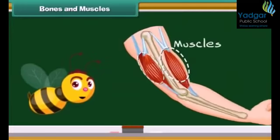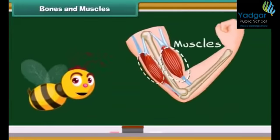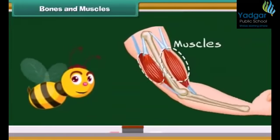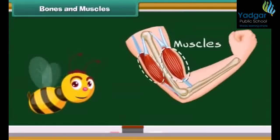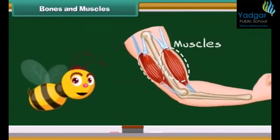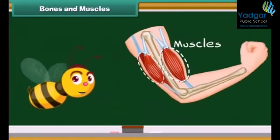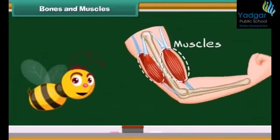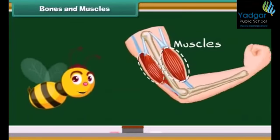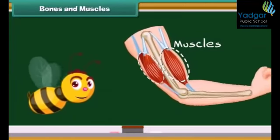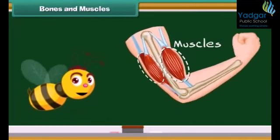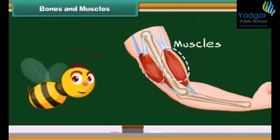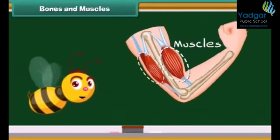Muscles are the soft part of our body. Muscles are attached to the bones. Bones cannot move alone; the muscles attached to them help in movement.